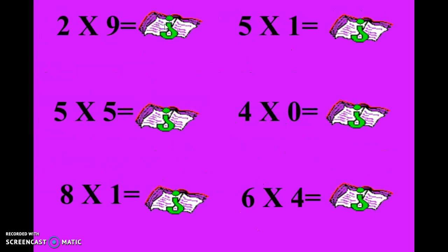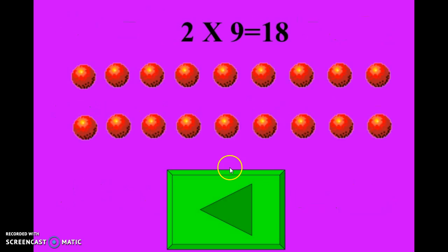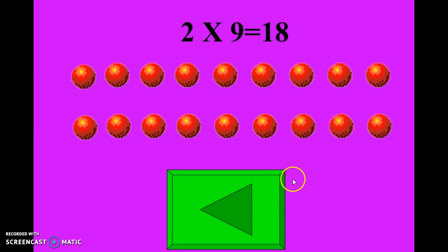We have two times nine, five times five, eight times one, five times one, four times zero, and six times four. Please pause the video while you try to answer these problems. For two times nine, we're going to do two sets of nine oranges as an example — therefore you have eighteen.